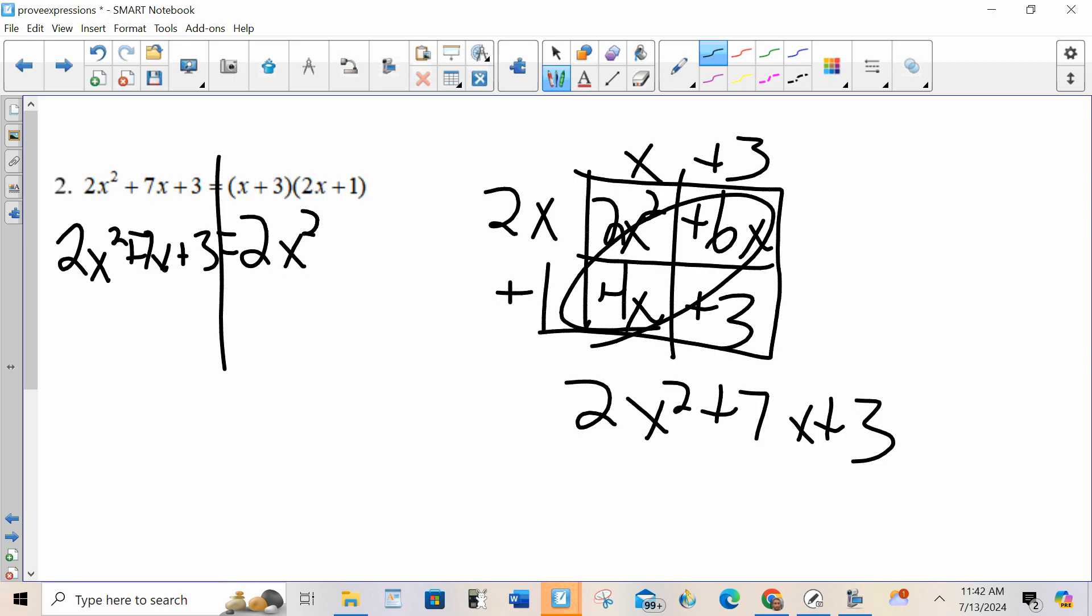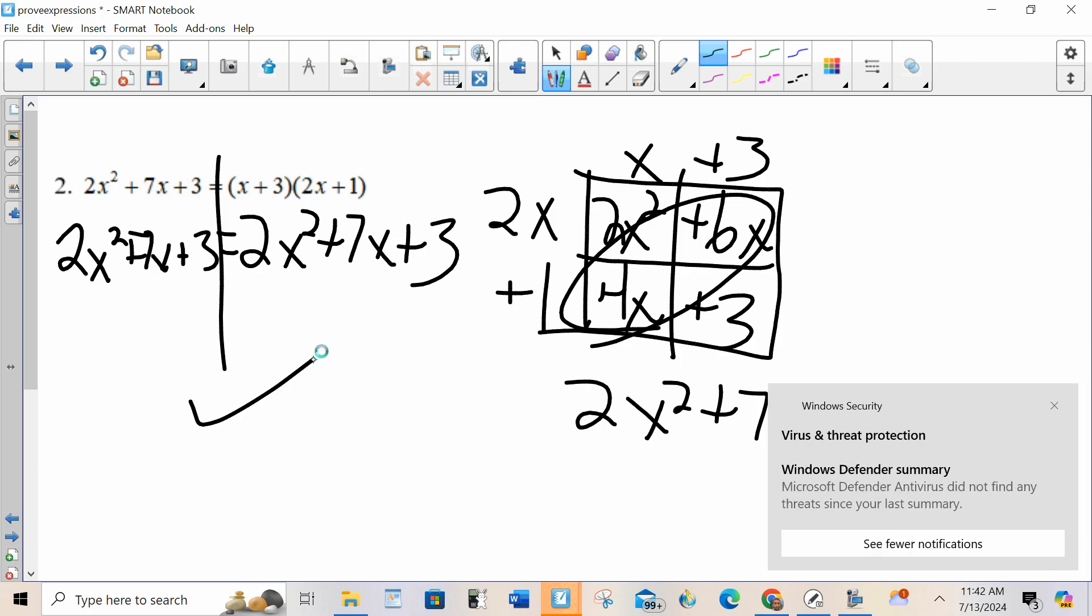I show that the left-hand side is equal to the right-hand side. I'm done. That's it. You're just getting each side in standard form and then showing that they're the same.